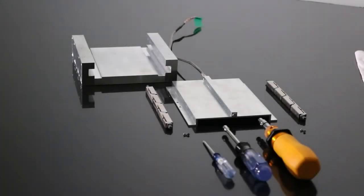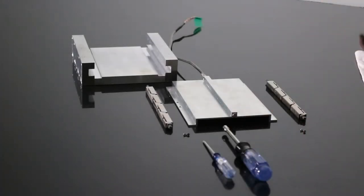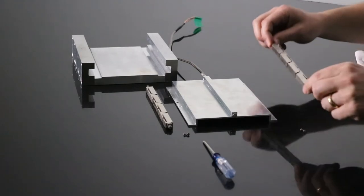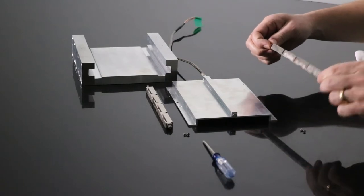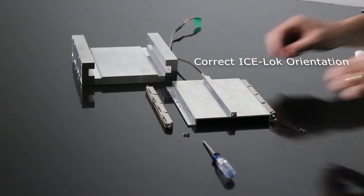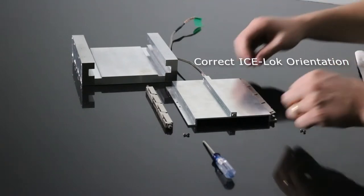The ice lock has a correct and incorrect orientation for installation. The correct orientation is what enables the high thermal performance of our ice lock. You can see with the correct orientation the ice lock tabs face away from the card.